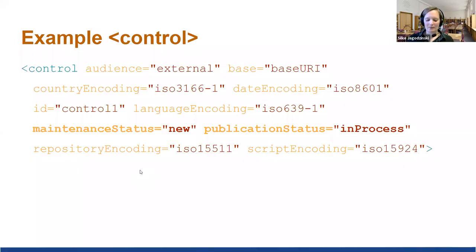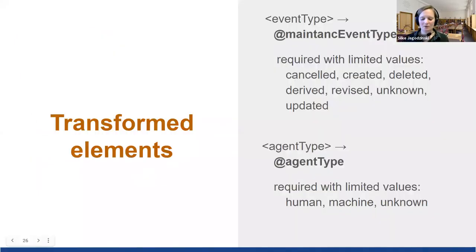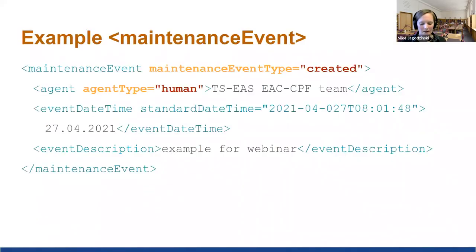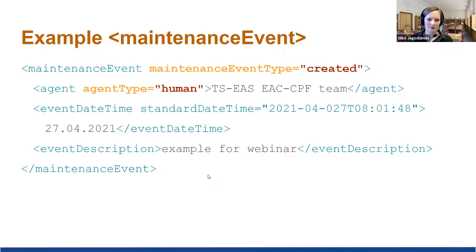There are also two elements with type information turned into attributes within the maintenance event. To describe the maintenance history of the EAC instance, element event type and agent type become attributes of the elements maintenance event and agent. The new attributes are maintenance event with the maintenance event type — for example 'created' — and agent with the agent type — for example 'human'. Some elements in the control area were transformed into attributes within the control area, and we also emphasize existing elements.